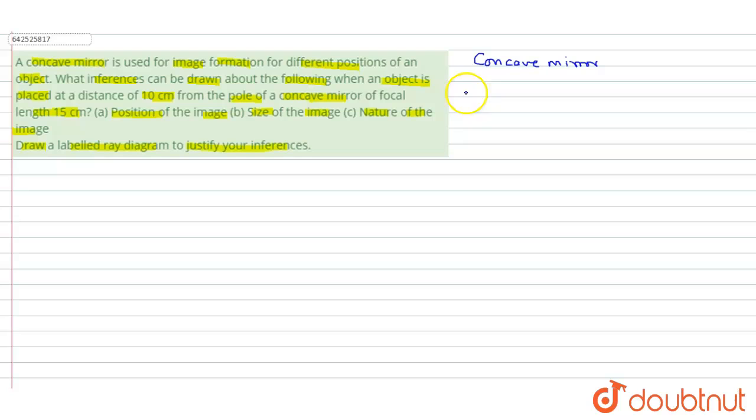From the given question, if we write down the data, focal length is given to be minus 15 cm. Object distance u is given as minus 10 cm.